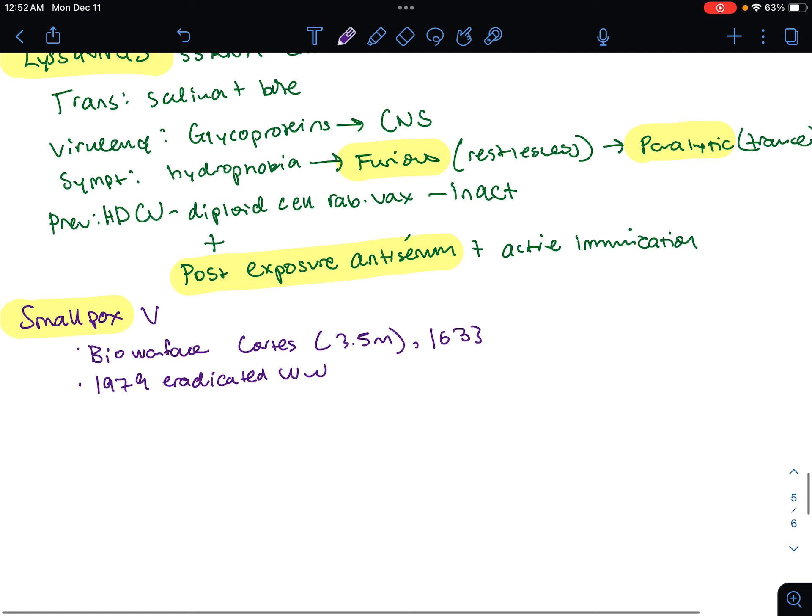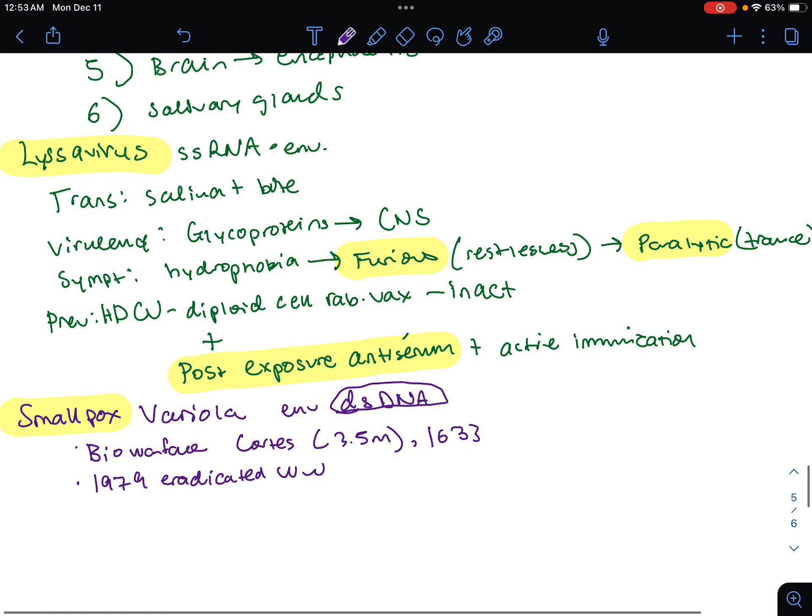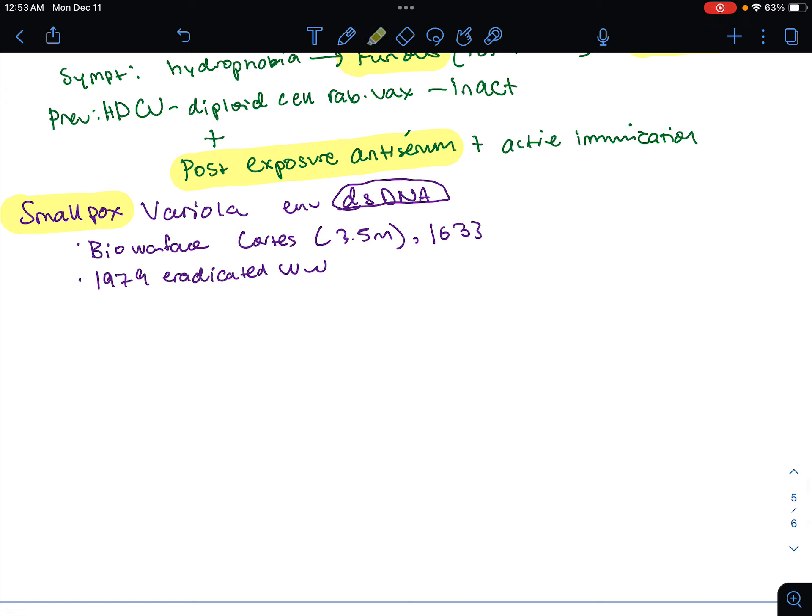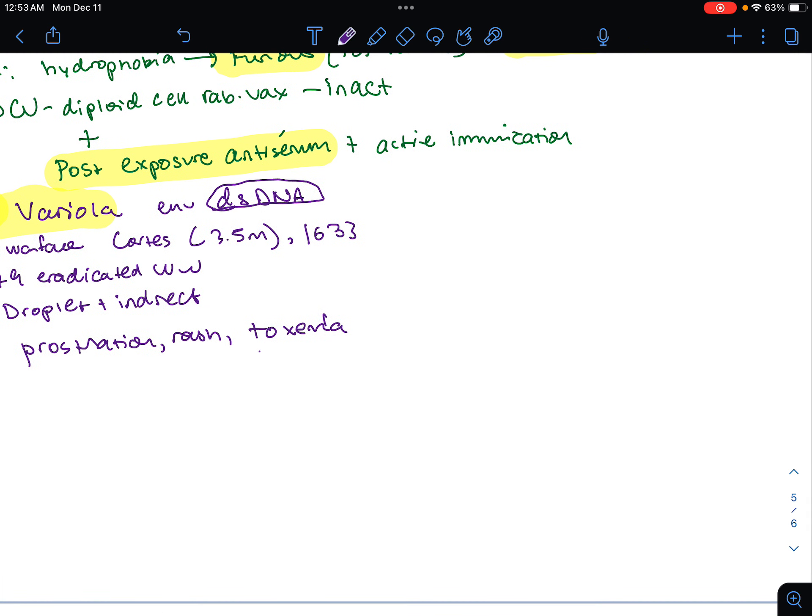It's caused by the variola. This is the enveloped double-stranded DNA virus. This is a unique thing so far we haven't seen anything that is DNA, we've been seeing single-stranded RNA. The mode of transmission is going to be droplet and indirect contact. Signs and symptoms are going to have fever, prostration, a rash, toxemia. A toxin is now in the blood and shock.